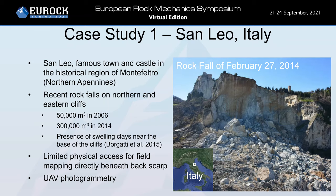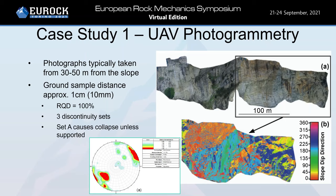UAV photogrammetry was applied and completed using a series of photographs 30 to 50 meters away from the slope, enabling a high-resolution model with a ground sample distance of 10 millimeters. This enabled the mapping of RQD, or rock quality designation, which was typically 100 percent. Three prominent discontinuity sets were identified. Set A, one of these sets, causes collapse unless supported.